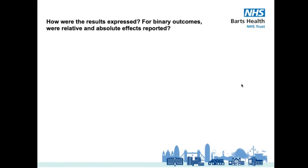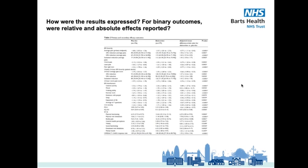Our next consideration point asks: how were the results expressed? For binary outcomes, were relative and absolute effects reported? We can go to the results section and the tables and graphs there. The outcomes are reported clearly, though there are quite a lot of them. Table 2 shows the primary and secondary outcomes as absolute values — the reduction in average pain score in columns two and three — and then reports the relative risk in the fourth column. You should always see the raw data reported before the authors express that data in relative terms. It's also worth considering how results are expressed, as some forms can make an effect sound greater than others. A relative risk reduction, for example, will be a bigger and more impressive number than an absolute risk reduction figure.